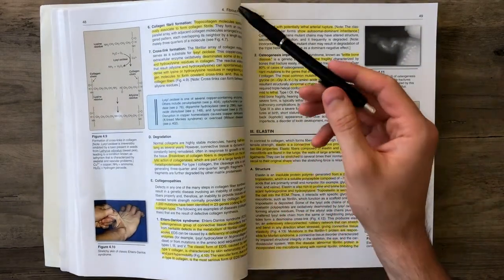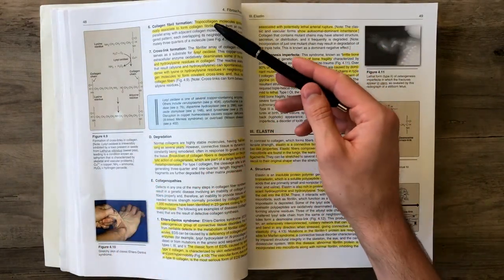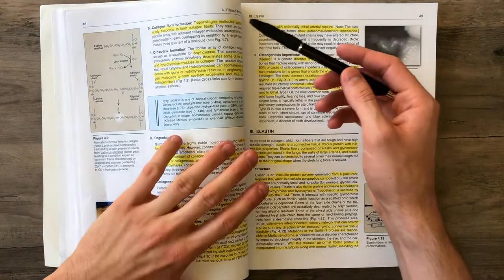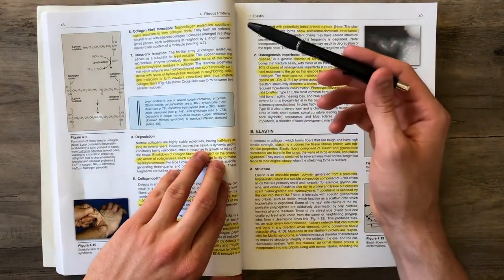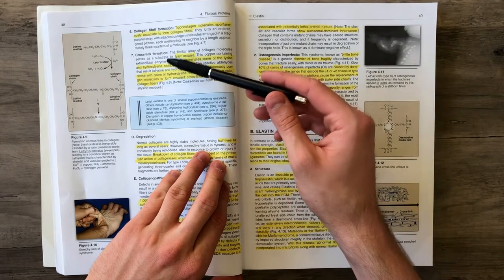From there, the tropocollagen molecules spontaneously associate with themselves to form a collagen fibril.